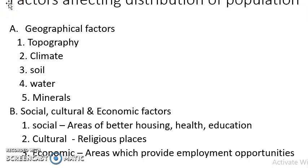We are going to study what are the factors which affect the distribution of population — factors which affect the distribution of population. It is divided into two important factors. One is known as geographical factors. Another one is known as social, cultural and economic factors. Geographical factors consist of the first one, that is topography.